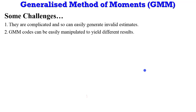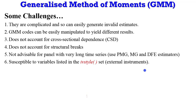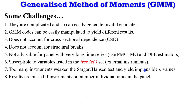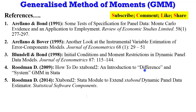What are the challenges of estimating GMM? They are complicated and can easily generate invalid estimates. GMM codes can be manipulated to give different results. GMM does not account for cross-sectional dependence or structural breaks. It is not advisable for panels with very long time series — in that case, use PMG, MG, or DFE estimators. Results react strongly to variables listed in the IV-style bracket. Too many instruments will weaken both the Sargan and Hansen tests and may produce implausible p-values. Results are also biased if the number of instruments exceeds the number of individual panels. Monte Carlo simulations suggest that cutting instruments in half can reduce bias by 40 percent.